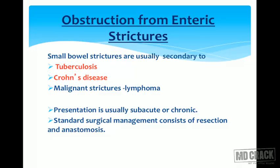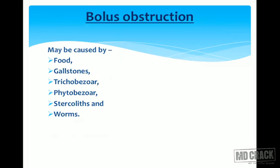Obstruction from enteric strictures — small bowel strictures are usually secondary to tuberculosis or Crohn's disease. Malignant stricture can be due to lymphoma. Presentation can be sub-acute or chronic. Standard surgical management remains resection and anastomosis.